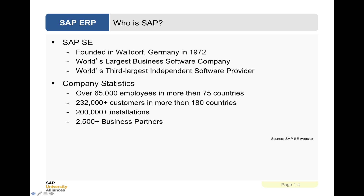SAP is the world's largest business software company. It is the market leader in ERP, ahead of Oracle and Microsoft Dynamics, and the third largest independent software provider in the world. It has between 65,000 and 70,000 employees in more than 75 countries, with nearly a quarter of a million customers in more than 180 countries. There are 200,000-plus installations of SAP products, and it makes sales through over two and a half thousand business partners that form part of the SAP community.